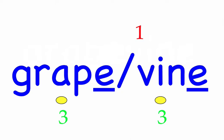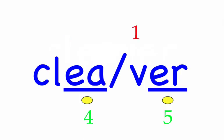Cleaver. The butcher used a cleaver. First syllable: clee, three sounds, K-L-E. Second syllable: ver, two sounds, V-ur. Cleaver — mark the word.